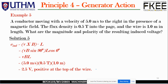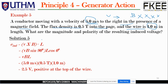Example 5: A conductor moving with a velocity of 5.0 meters per second to the right in the presence of a magnetic field. The flux density is 0.5 Tesla into the page, and the wire is 1.0 meter in length. Find the magnitude and polarity of the resulting induced voltage. Note that v is perpendicular to B.